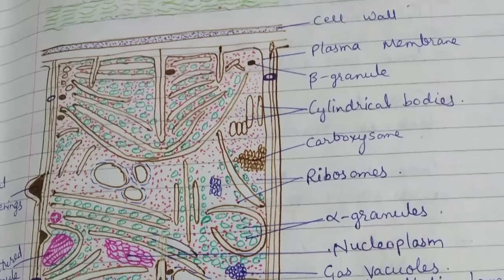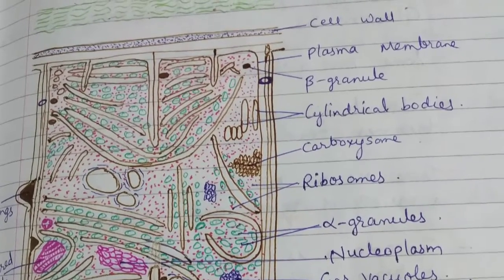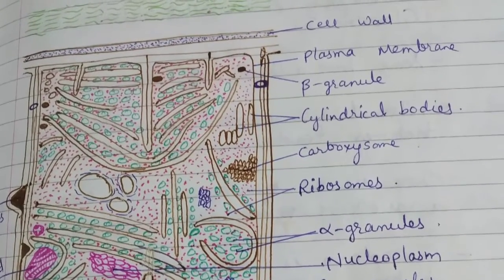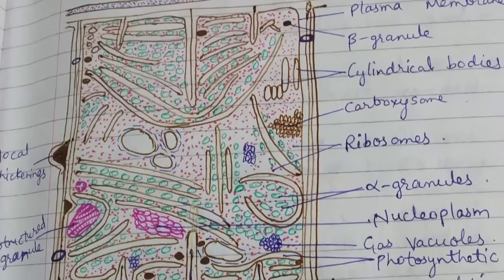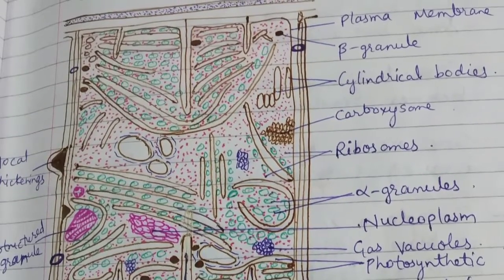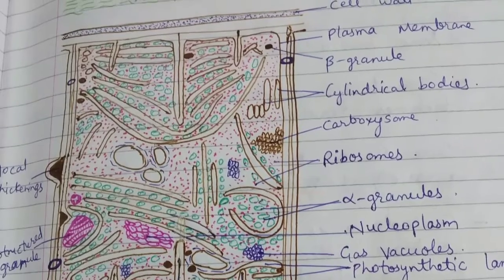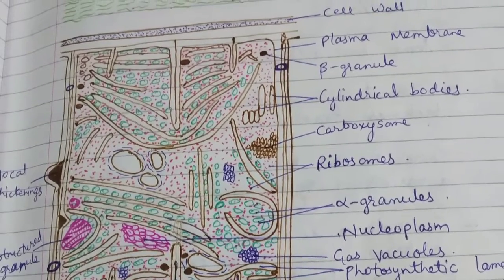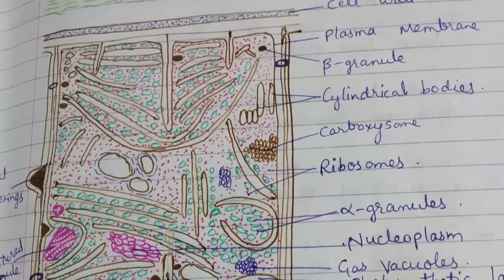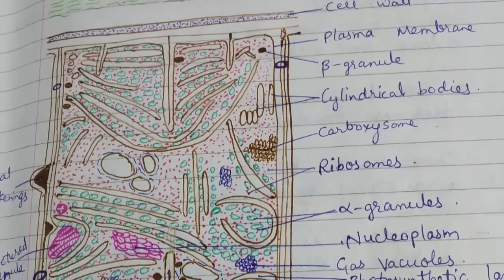Now next structure is cytoplasmic membrane which forms limiting membrane of cytoplasm and it is made up of protein-lipid-protein layers. It has many infoldings which penetrate the cytoplasm which give rise to new pigment containing thylakoids.